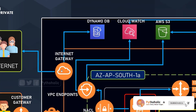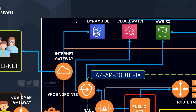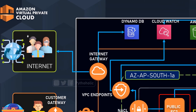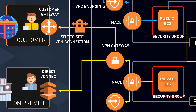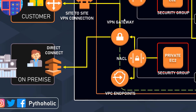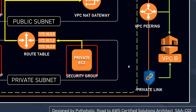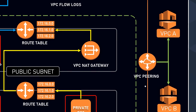From our VPC internet gateways, we can connect to DynamoDB and to our users as well. With site-to-site connection and customer gateways, we are able to connect to the customers. We have the VPN gateway — the virtual private network gateway — to connect to on-premise instances using Direct Connect. We also have AWS PrivateLink, which provides private connectivity between our VPCs, AWS services, and on-premise applications securely on AWS. And we have VPC peering, which establishes a network connection between two VPCs, enabling you to route traffic between them privately.